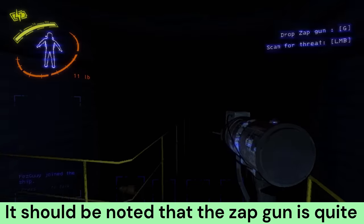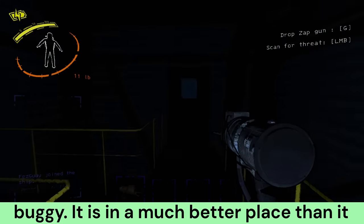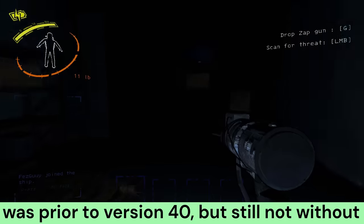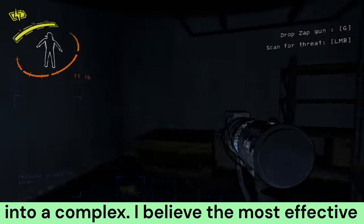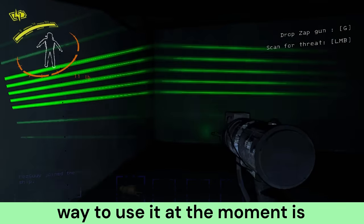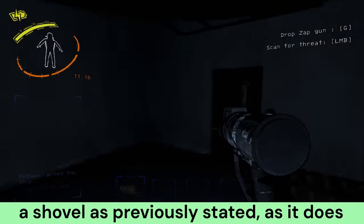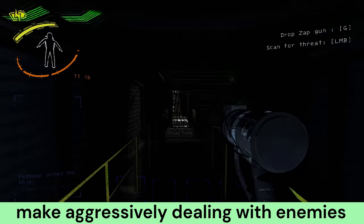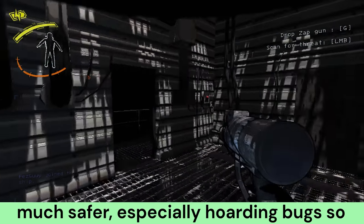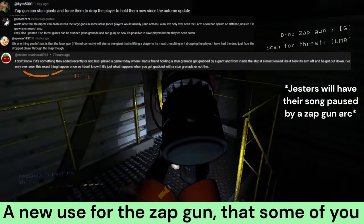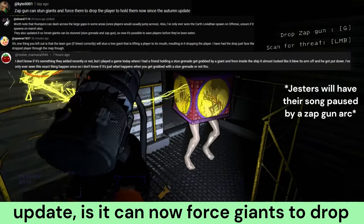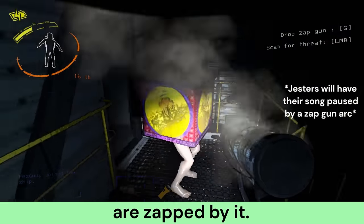After zapping something, the zapgun will go on cooldown, which is noted by it steaming profusely. It cannot be used during this period which lasts 5 seconds. It should be noted that the zapgun is quite buggy. Combined with its price, it is not something I often consider bringing into a complex. A new use for the zapgun since the version 40 update is that it can now force giants to drop players they are about to eat when they are zapped by it.